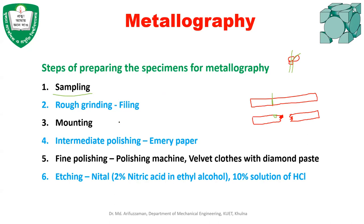The second step is rough grinding, which involves filing. This step is not always required — if you want to do surface analysis, filing will destroy the surface characteristics. But if you want to investigate mechanical properties based on the metal surface, you do the filing and then proceed to polishing and other steps.